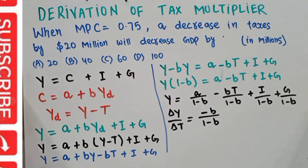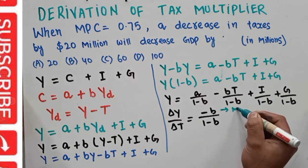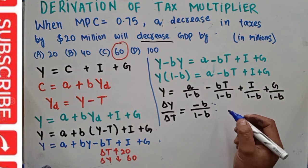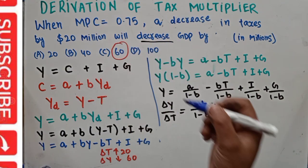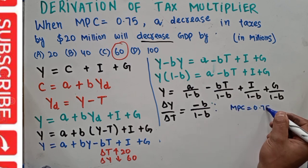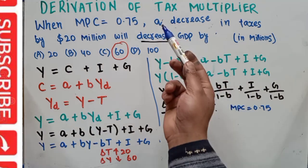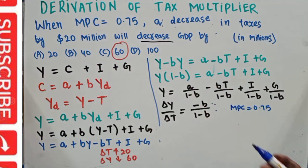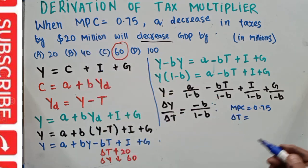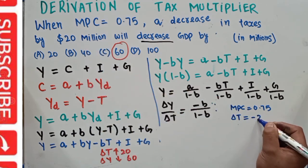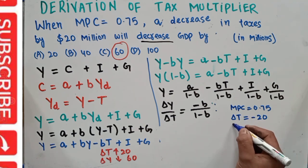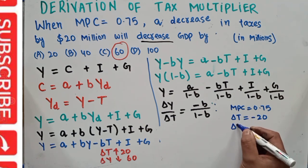So the tax multiplier is −b/(1−b), where b denotes the marginal propensity to consume. Now applying this to our problem: MPC = 0.75, and the decrease in taxes means ΔT = −20 million dollars. We need to find the impact on income, ΔY.